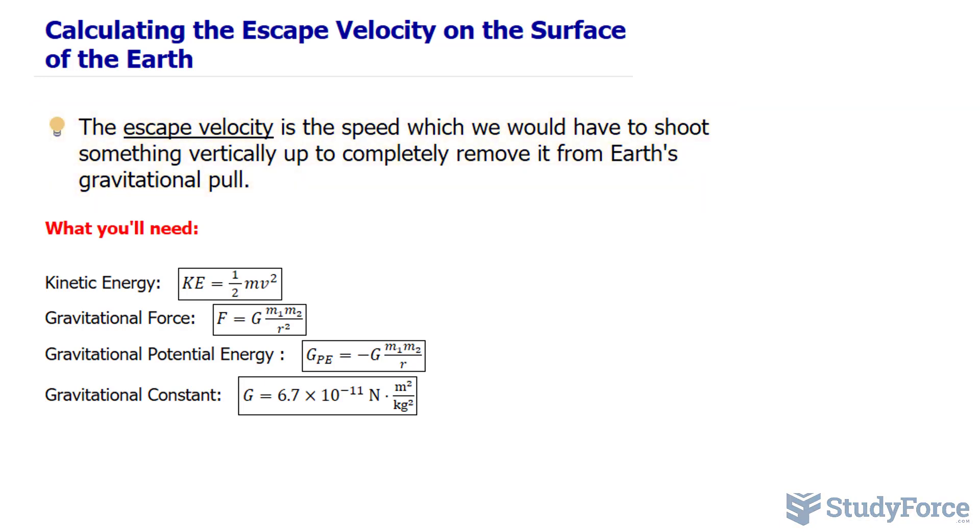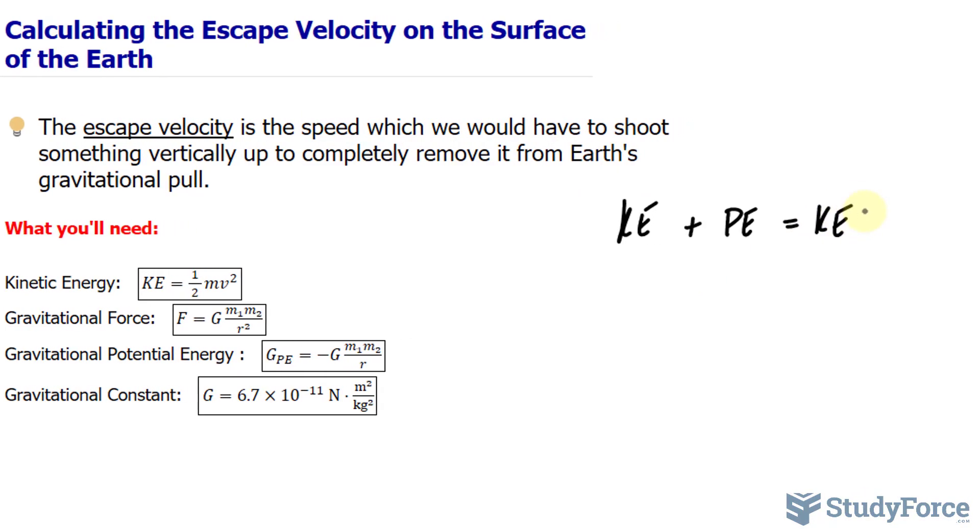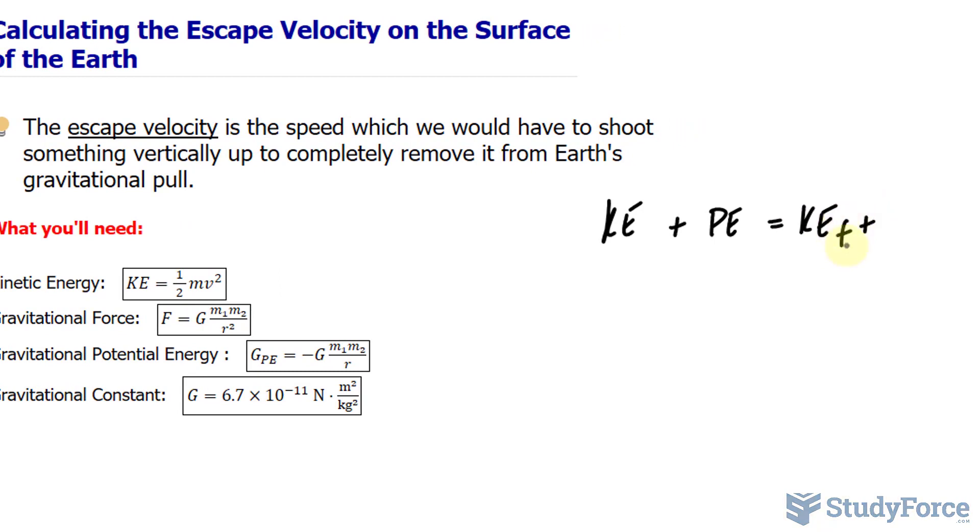To calculate something like this, we need to consider the conservation of energy formula. And that formula incorporates the kinetic energy and the potential energy before and after. The way it's represented is we say kinetic energy plus the potential energy is conserved, so you'll have the same on the right side. This part of the equation will be the initial and the right side of the equation will be the final, and I'll represent that with these subscripts.